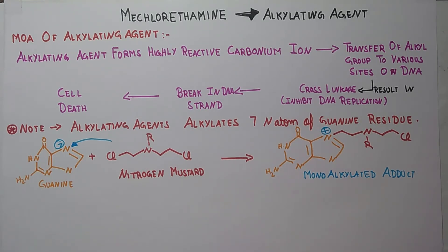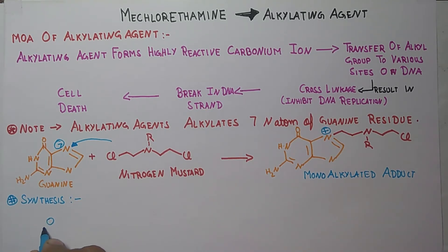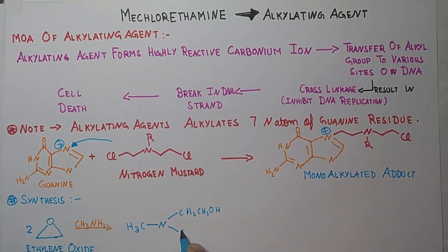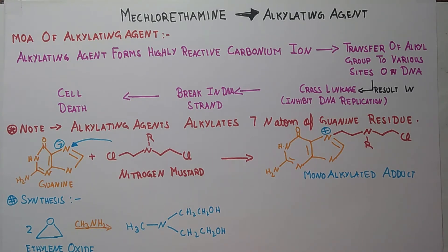Now coming to the synthesis part of Mechlorethamine. The starting material of Mechlorethamine is ethylene oxide. In the presence of the reagents, the reaction happens by the opening of this structure. When we react it in the presence of these conditions, we get the final product, which is Mechlorethamine.